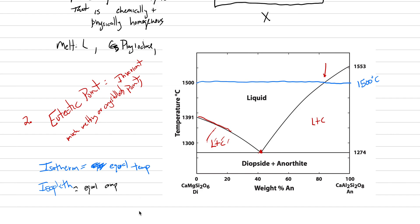And an isopleth is a line of equal composition. So if I told you to put a line at anorthite 80 diopside 20, you would say, okay, here's anorthite 100, here's anorthite 80. And if it's anorthite 80, it has to be diopside 20. And so this right here would be the isopleth of our example.